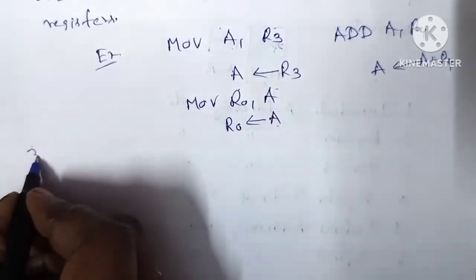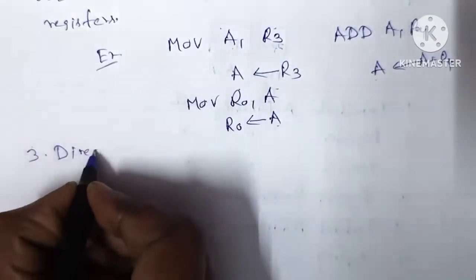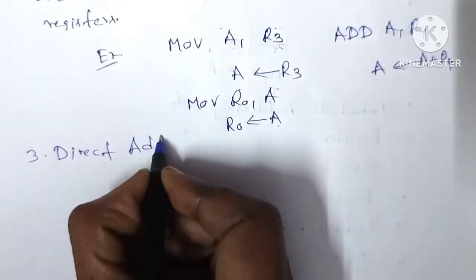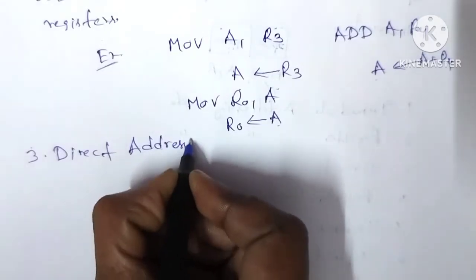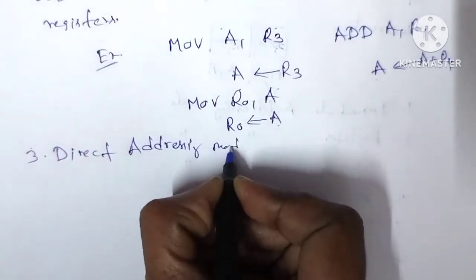Next addressing mode: direct addressing mode. In this mode, only the internal data memory can be used.